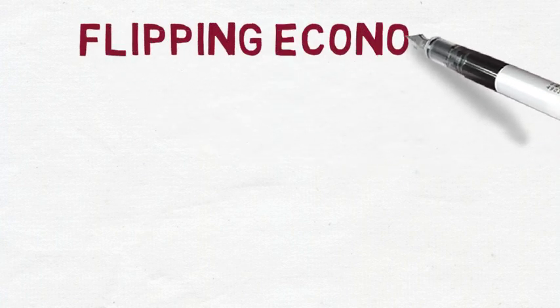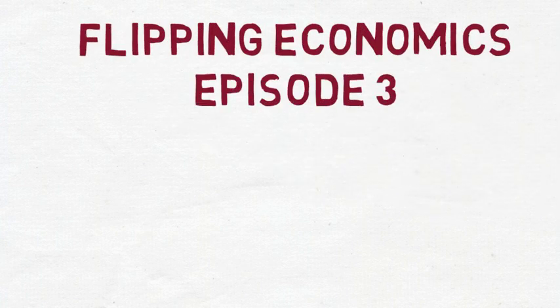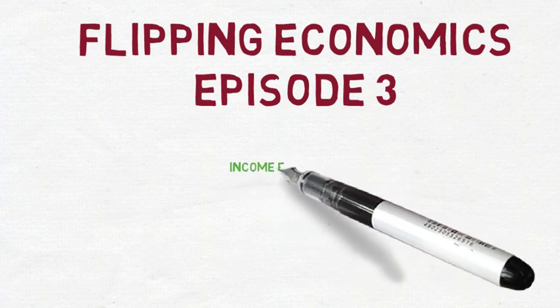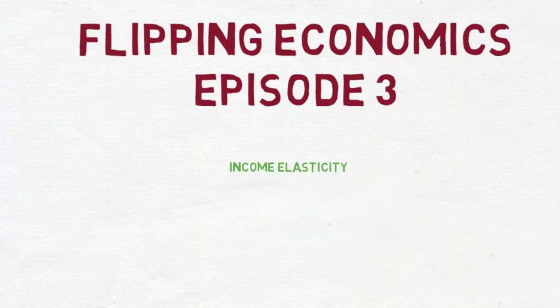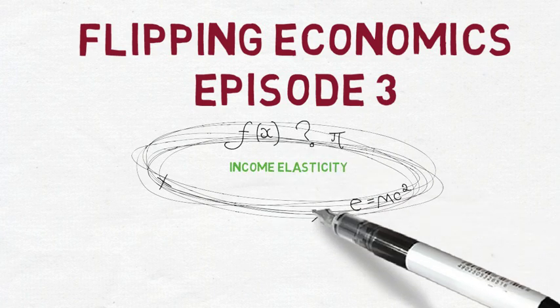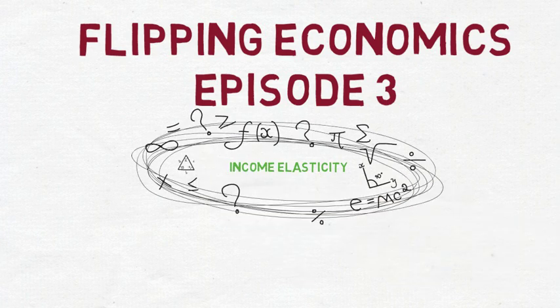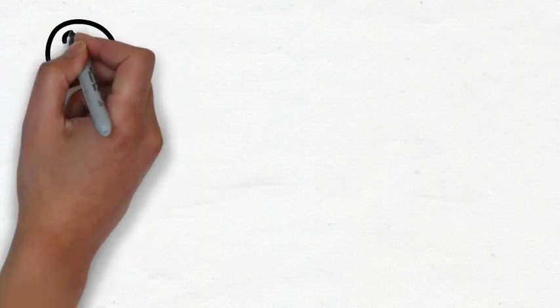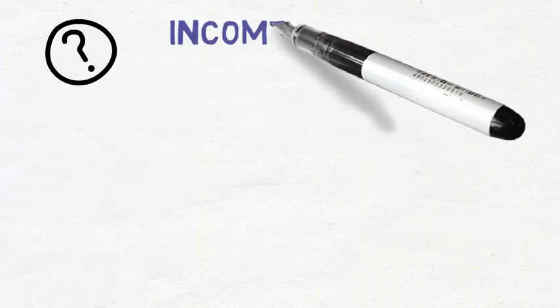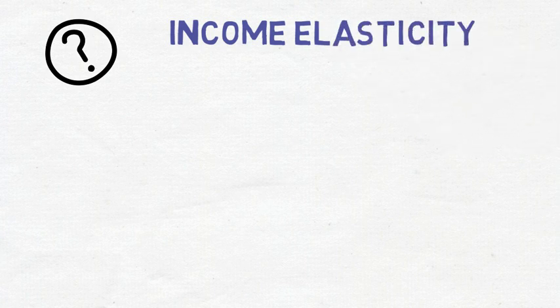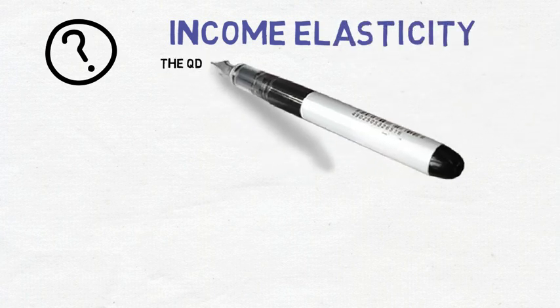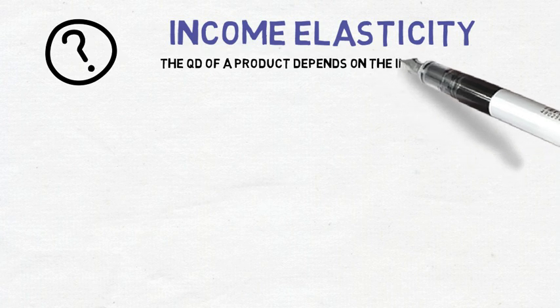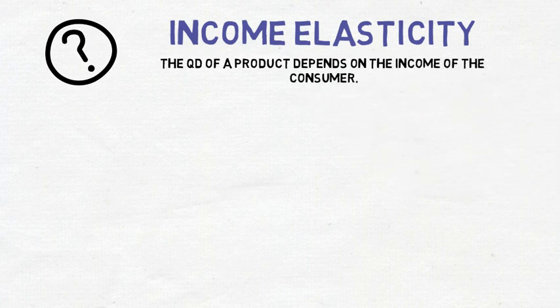Welcome to the third episode of Flipping Economics. In this episode we will look at the second type of elasticity: income elasticity. Income elasticity is where the quantity demanded of a product depends on the income of the consumer.